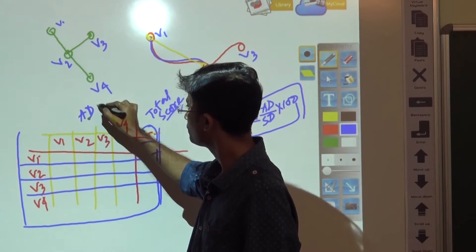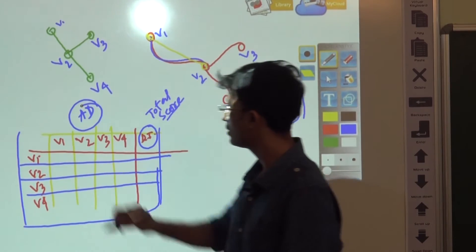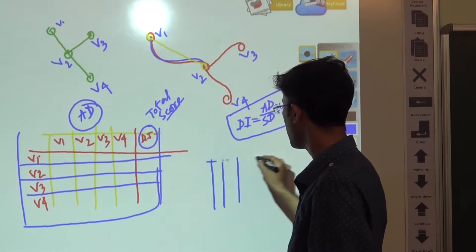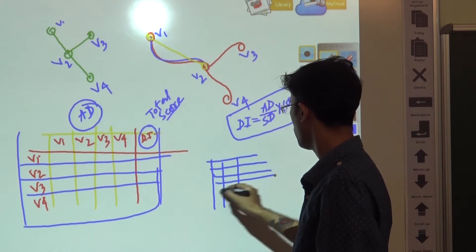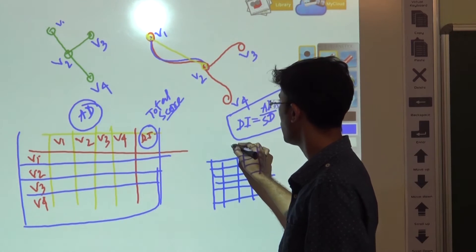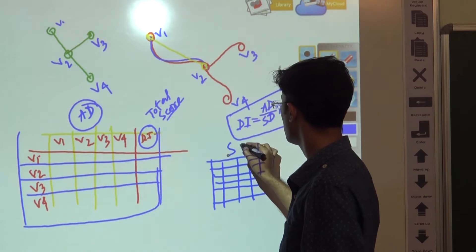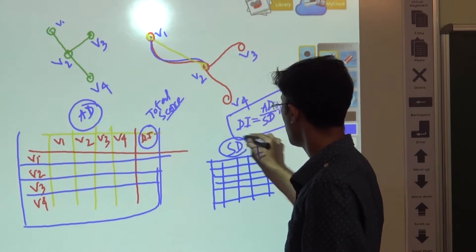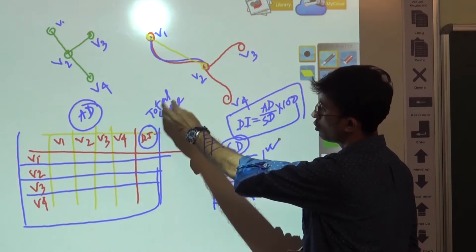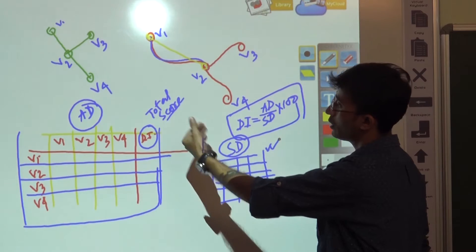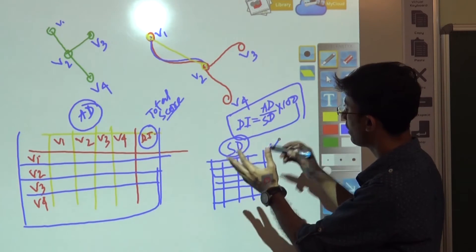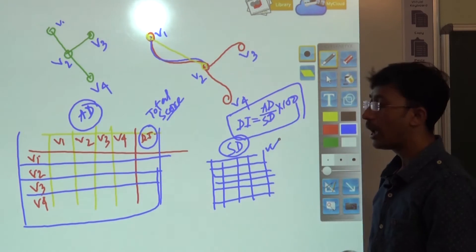We prepare one matrix table for actual distance and another matrix table for straight line distance. Based on the total scores from these two matrices — the actual distance and straight line distance — we calculate the Deterinders value.